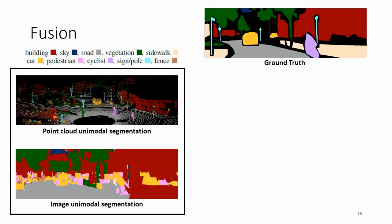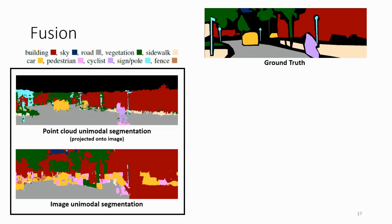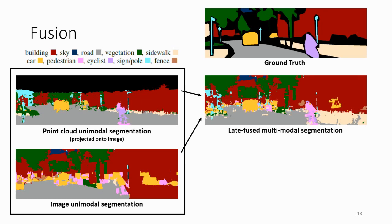Here are some qualitative examples of our algorithm. On the left, we have a unimodal prediction using just the point cloud information on top and the image information on the bottom. The first step towards fusion is we need to map the point cloud predictions onto the image plane. And we can do this because we assume that we know the extrinsic calibration between these two sensors. Notice that the top quarter of the image is actually not covered by the point cloud because it's too high in elevation. But for the rest of the image, we can train a late fusion classifier to merge the predictions from earlier in the algorithm.